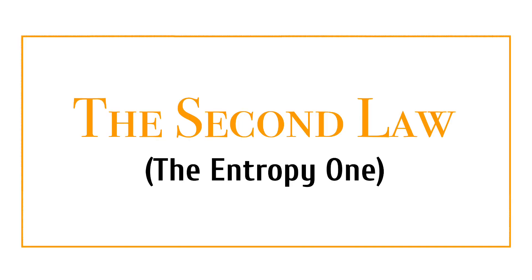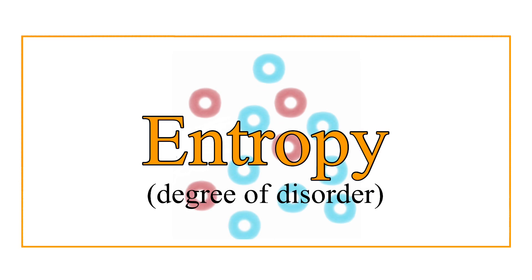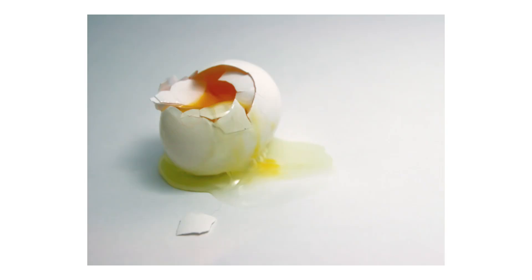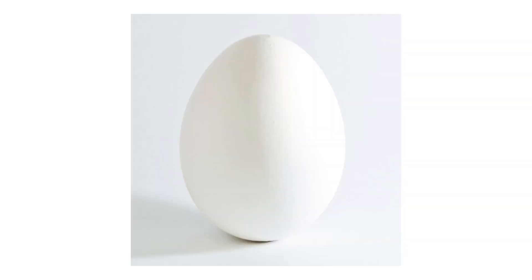For the second law, think chaos — because the universe is constantly becoming more and more chaotic through entropy. This explains why heat naturally flows from hot to cold and not cold to hot, since things can't spontaneously become ordered.